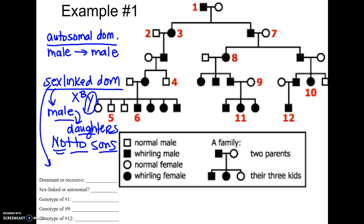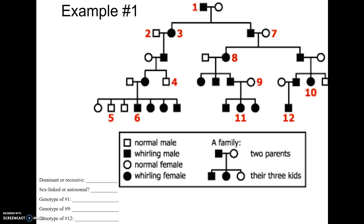Also, with sex-linked dominant, all daughters of a male with the trait should have the trait. Looking at this pedigree, I see a male with the trait who gives it to his daughter — that would be okay — but he also gives it to his son. That tells me this cannot be a sex-linked trait, because if it were, he'd be X^B Y, the mom would be X^b X^b, and there's no way they could have a son with it. So we've determined this particular trait is autosomal dominant.